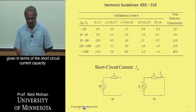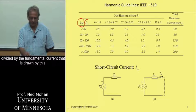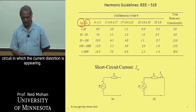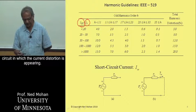And this is given in terms of the short circuit current capacity divided by the fundamental current that is drawn by this circuit in which the current distortion is appearing.